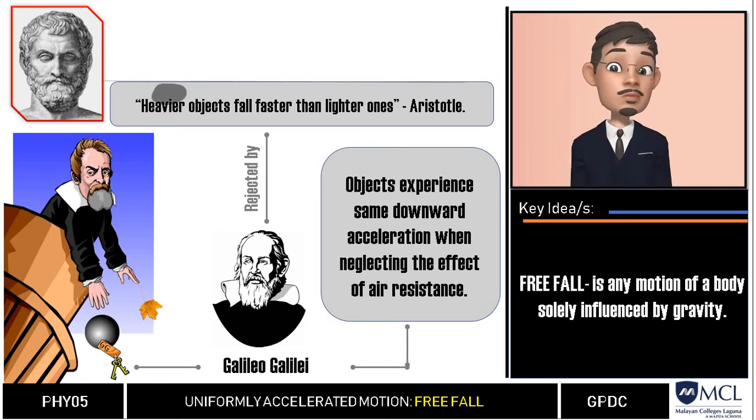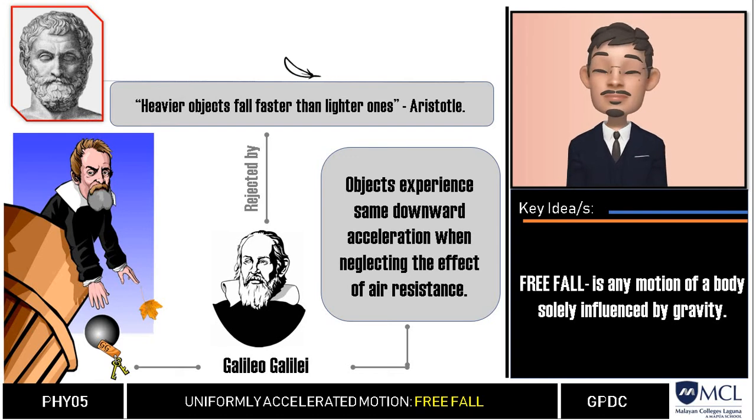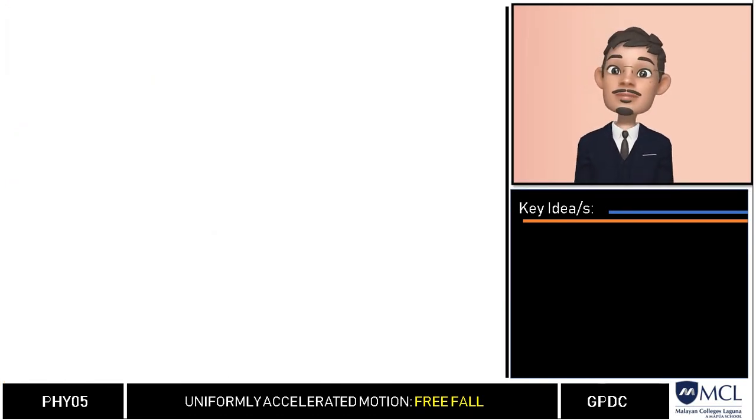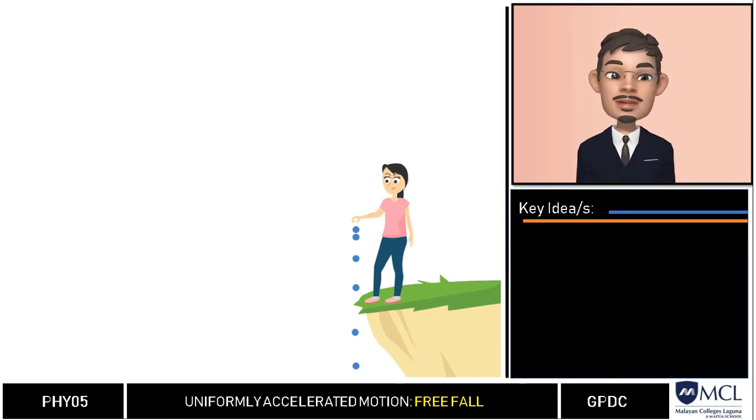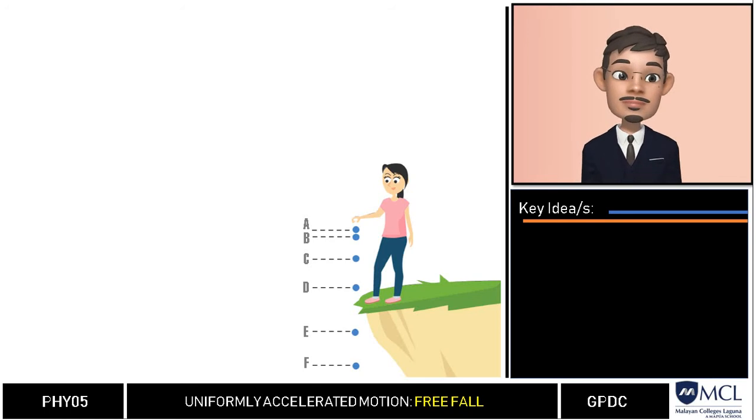To clearly understand this concept, take this situation as an example. Suppose that a person stood high on a cliff and dropped a rock from that height. Let us assume that the velocity of the rock was measured at each second while it falls. For this situation the effect of air resistance is negligible and only gravity acts on the rock.